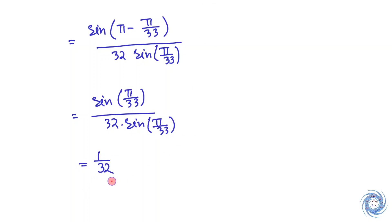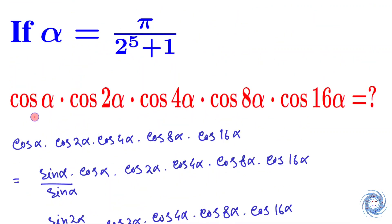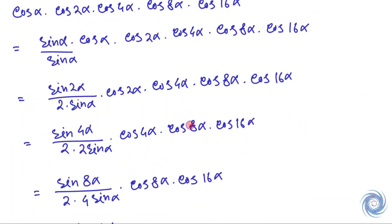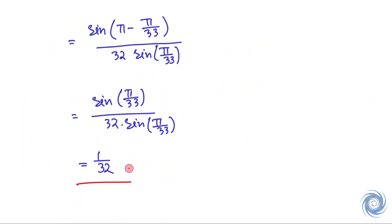So finally we have 1 over 32. Here we are supposed to find the value of this given expression, and we have the given expression is equal to 1 over 32. So we are done, thank you.